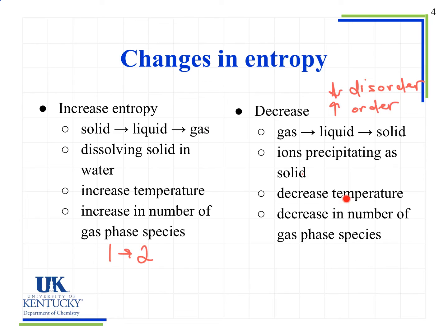If we decrease the temperature, we slow down the molecules and are more likely to go into a lower-disorder or more ordered phase. The molecules slow down and are more likely to be in some ordered arrangement. We also see a decrease in entropy when we have a decrease in the number of gas phase species. When we go to fewer gas phase species, we have a more ordered arrangement and therefore a decrease in entropy.